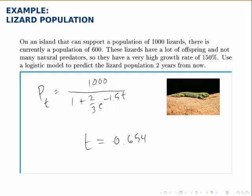Therefore, this model predicts that the population will hit 800 about three-fifths of a year from now. In this example, solving for t when we're given a population is a little more tricky, but it can still be done.